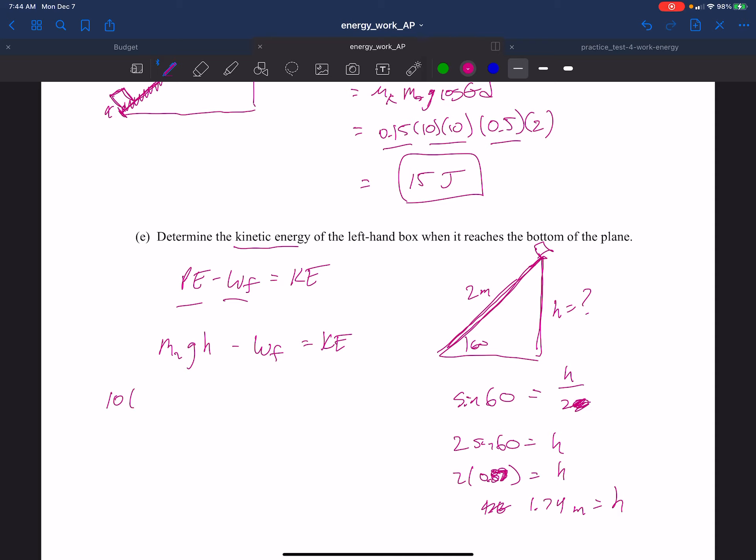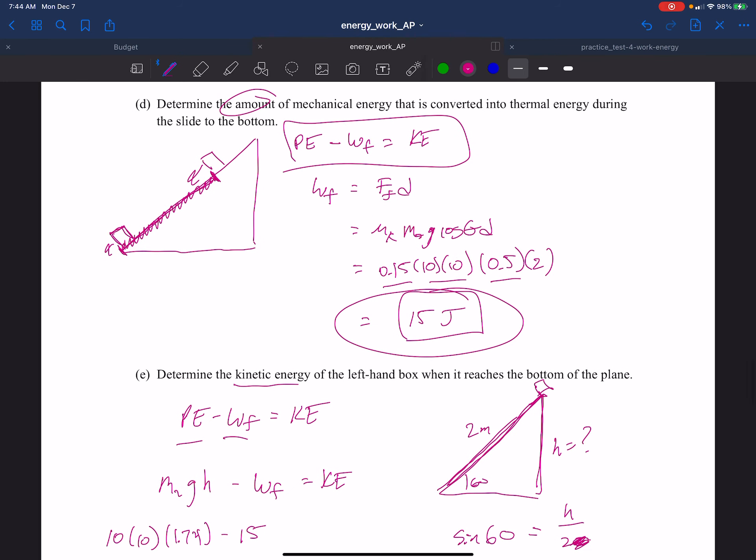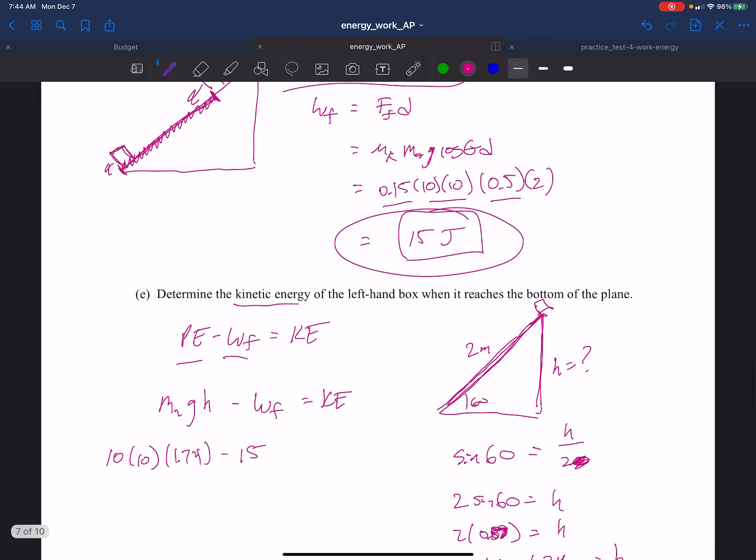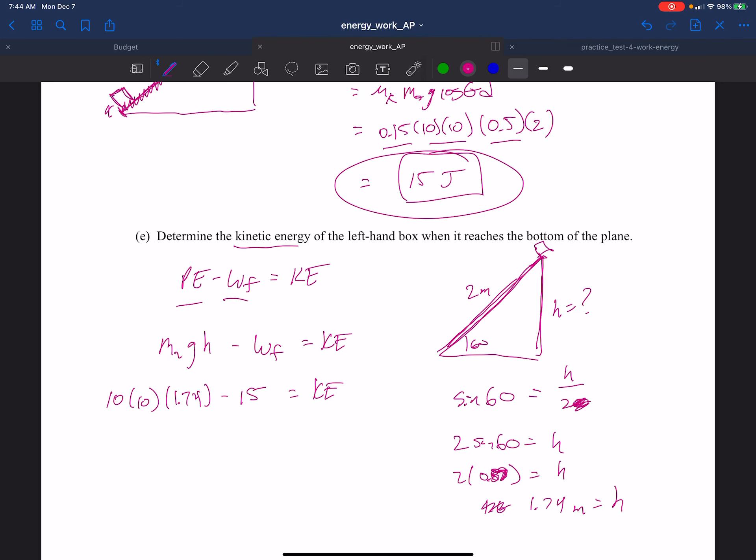So 10 times 10 times 1.74 minus 15, that 15 again comes from here. We already figured out the work done by friction. That has to equal the kinetic energy left over at the end. So 100 times 1.74 is 174 minus 15 equals KE. So it looks like 159 joules is the KE, and we could figure out the velocity if we wanted to, but we don't want to because it's 7 in the morning, and this is all that the question's asking for. So 159 joules of kinetic energy is left over at the end.